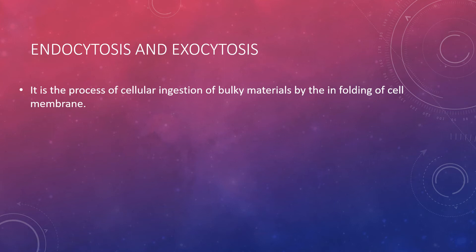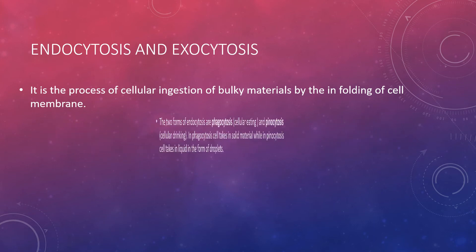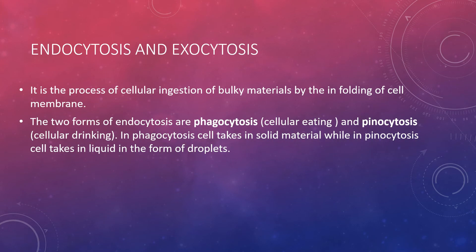There are two types of endocytosis. The first is phagocytosis and the second is pinocytosis. Phagocytosis means cellular eating, meaning the cell intakes solid materials. Pinocytosis means cellular drinking, meaning the cell intakes liquid material.